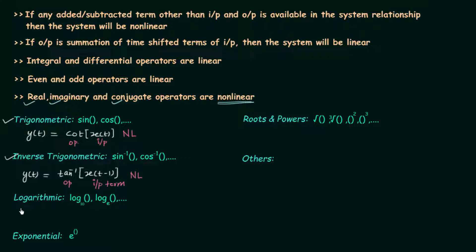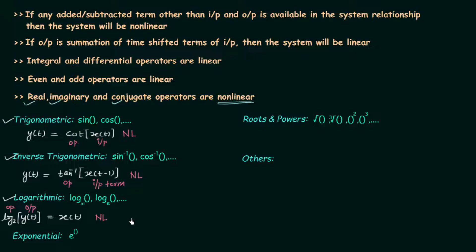The next family is the family of logarithms, for example log base 10, log base e, etc. In this example, log base 2 is operating on the output y(t), and it equals x(t). The nonlinear operator log 2 is operating on the output of the system, and therefore the system is nonlinear, because whenever any nonlinear operator operates either on input or on output or on both, the system is nonlinear.